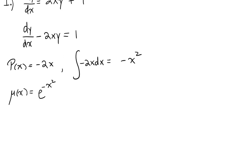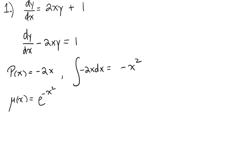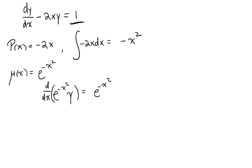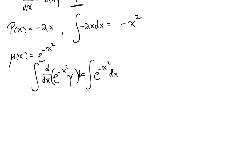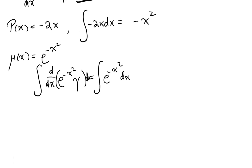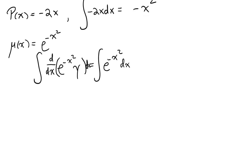If we multiply e to the minus x squared — our integrating factor — so e to the minus x squared times y, and we take the derivative of this, then we know that this will equal e to the minus x squared times our right-hand side, which is just 1. Now let us take the integral of both sides. Normally we would take the indefinite integral, but in this case we realize that on the right-hand side we have the integral of e to the minus x squared dx, and this is not an integral we can readily evaluate because it is not an elementary function.